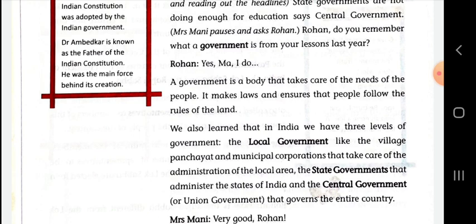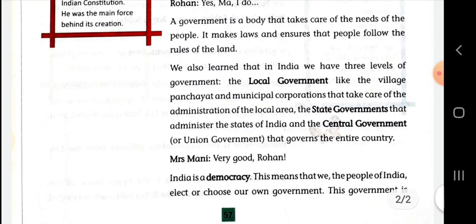Now we are going to learn about the central government. The central government governs the entire country — the whole country is governed by the central government. Local and state governments govern the political units of our country. A country is divided into states, and states are divided into different districts and different blocks. These are the political units, and apart from the country level, all political units are headed by the state and local governments.